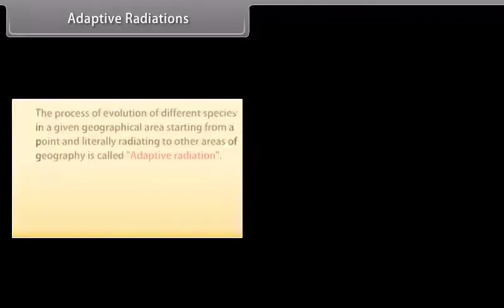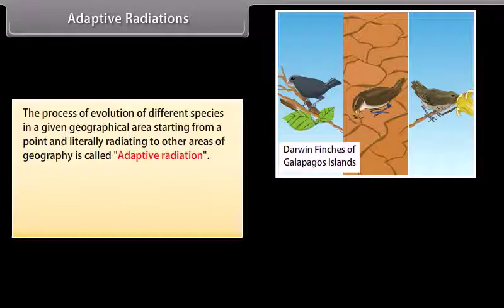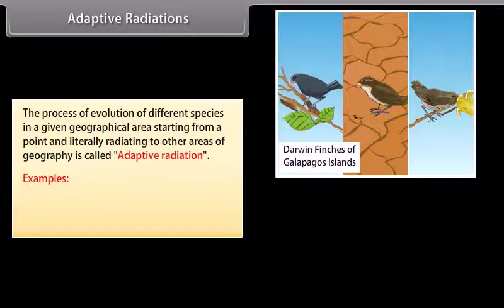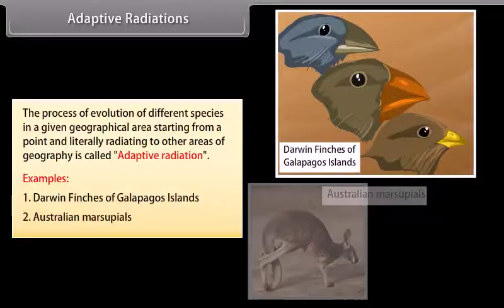Adaptive radiations. The process of evolution of different species in a given geographical area starting from a point and literally radiating to other areas of geography is called adaptive radiation. Darwin finches of Galapagos islands, Australian marsupials.